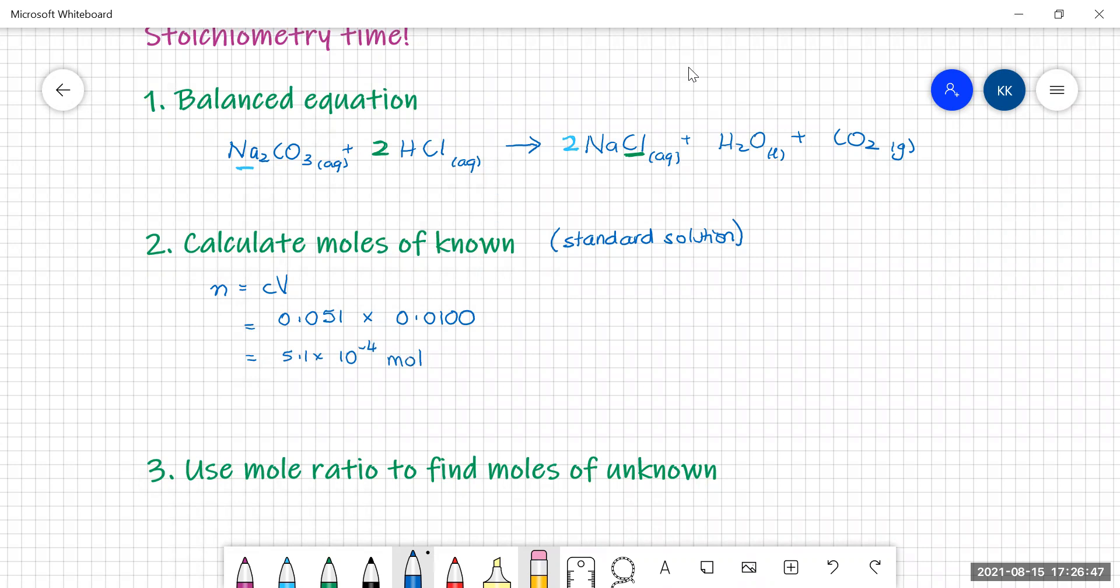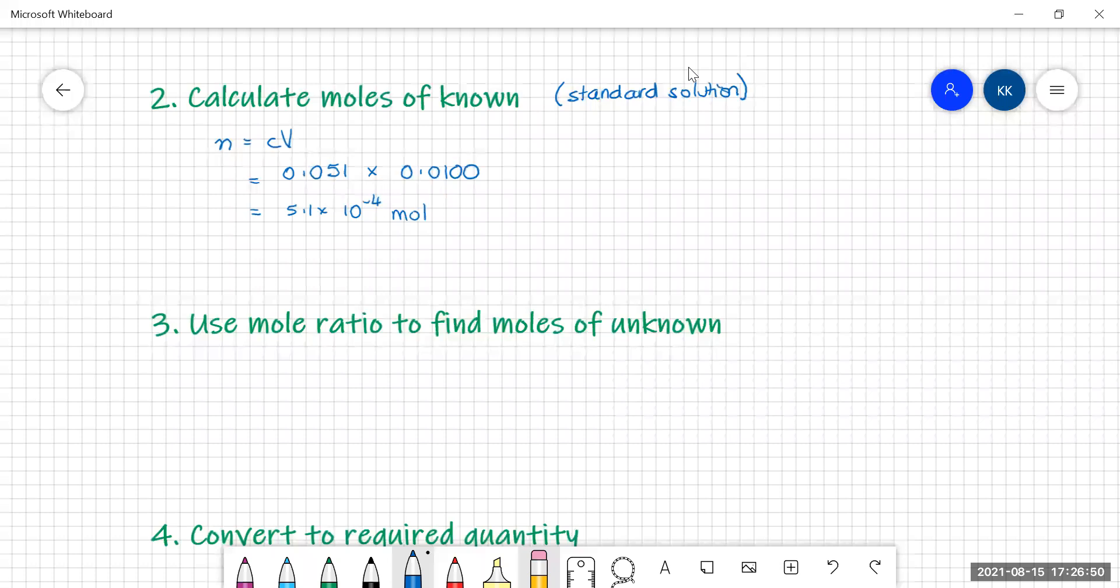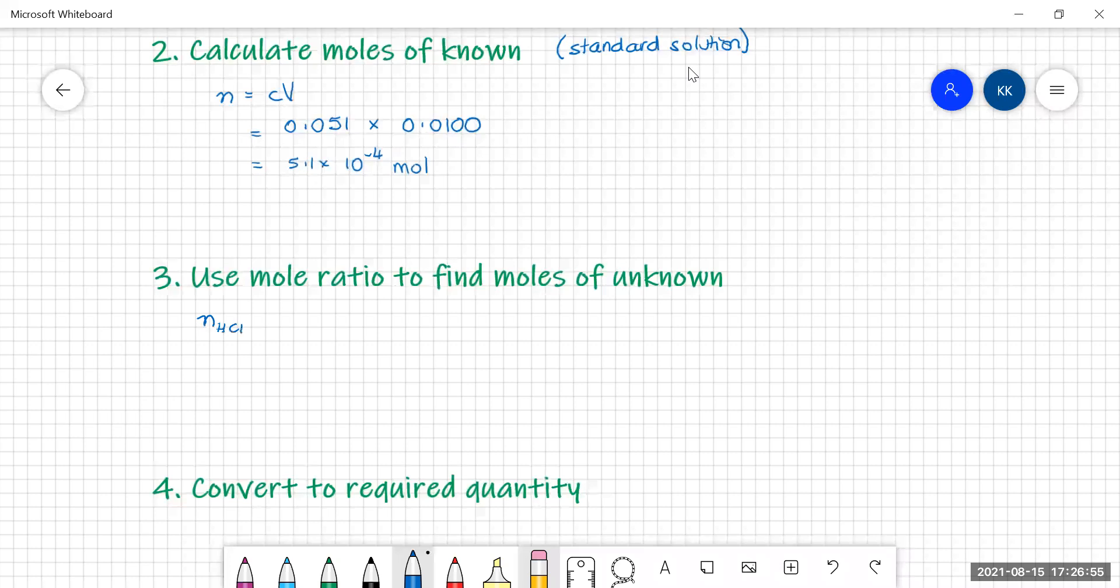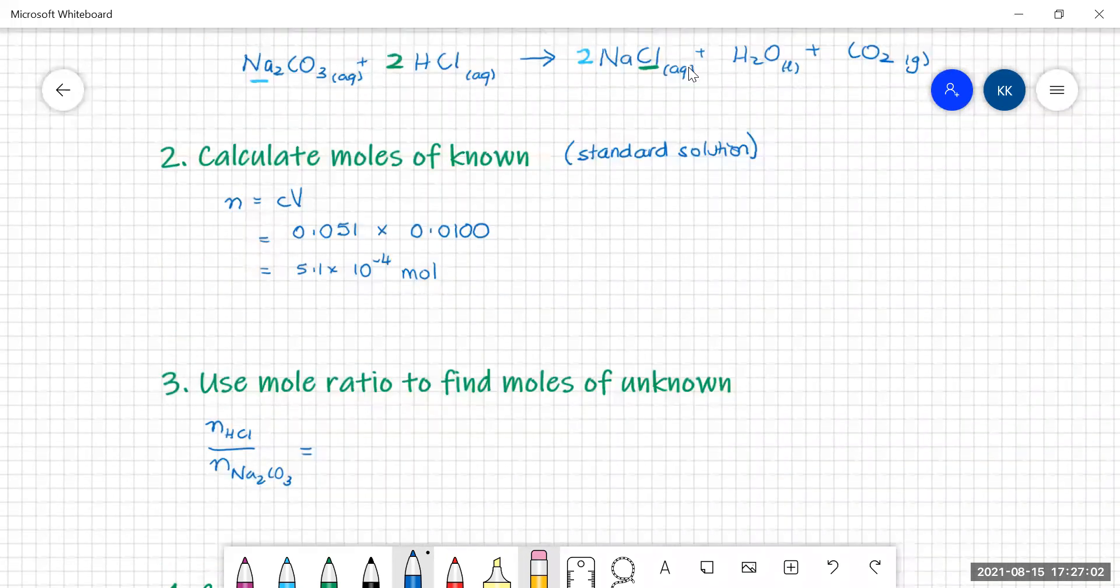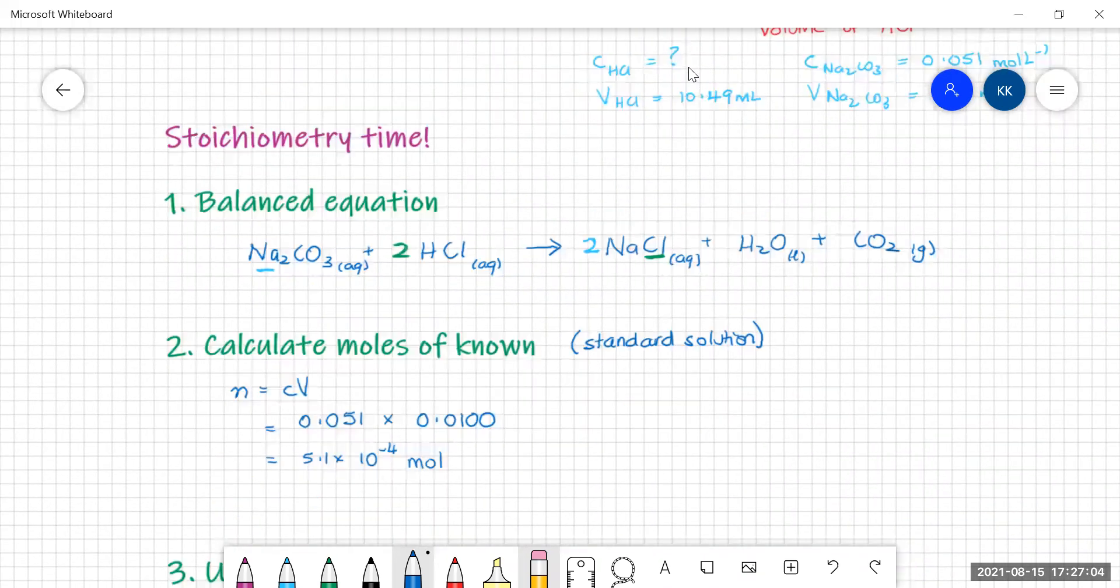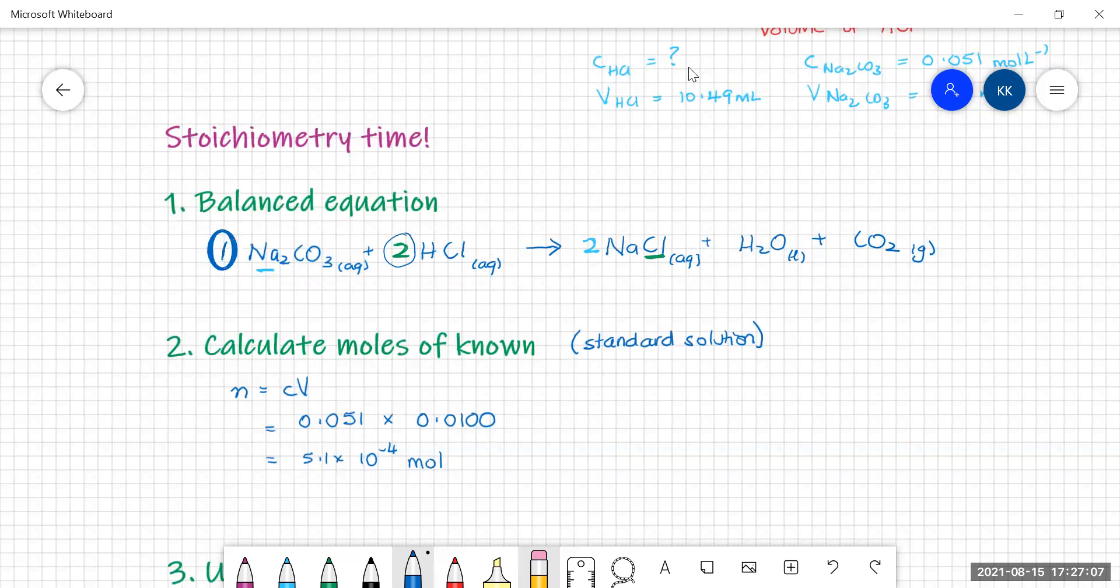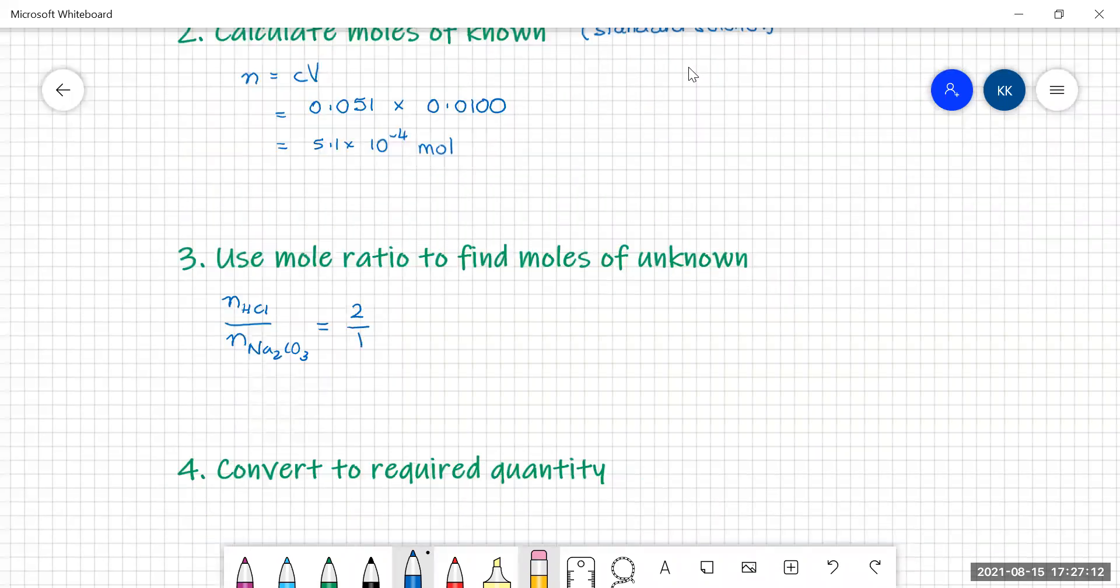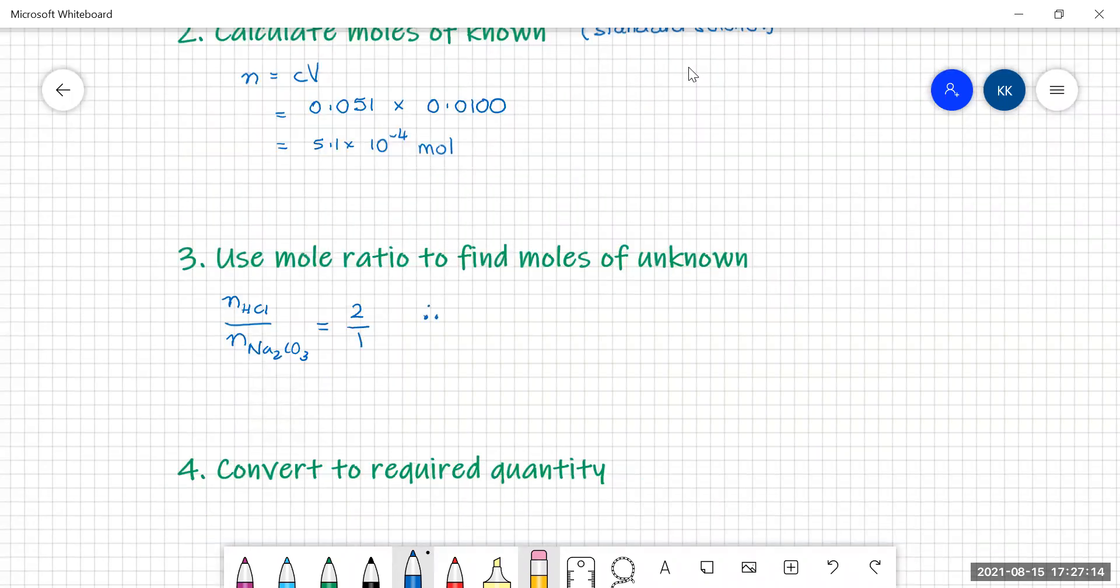Now we need to use the mole ratio to find the moles of the unknown. So the unknown here is our hydrochloric acid. So moles of hydrochloric acid over moles of sodium carbonate. If we go up to our equation, we've got two moles of hydrochloric acid for every one mole of sodium carbonate. So it's two to one. And of course, doing a little bit of algebra, that means that the moles of hydrochloric acid, if we cross multiply, is equal to two times the moles of sodium carbonate.